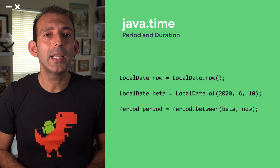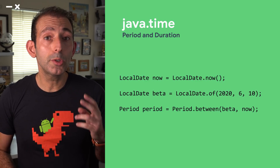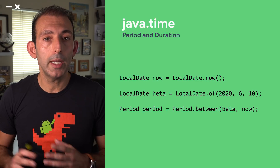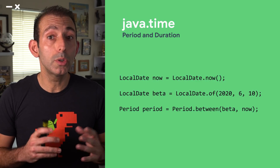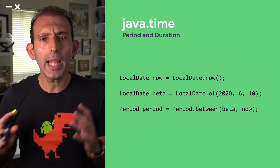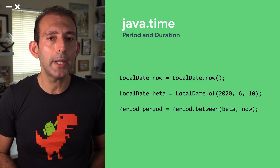The new Java Time API also has two new classes — Period and Duration — to define a date range or length of time respectively.